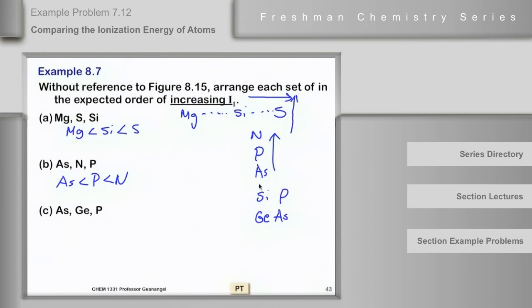So we have the trends increasing from left to right, and increasing from bottom to top. So as we look at this, germanium would have a smaller ionization energy one than arsenic, and arsenic would be less than phosphorus, so it should be Ge is less than As, less than phosphorus.